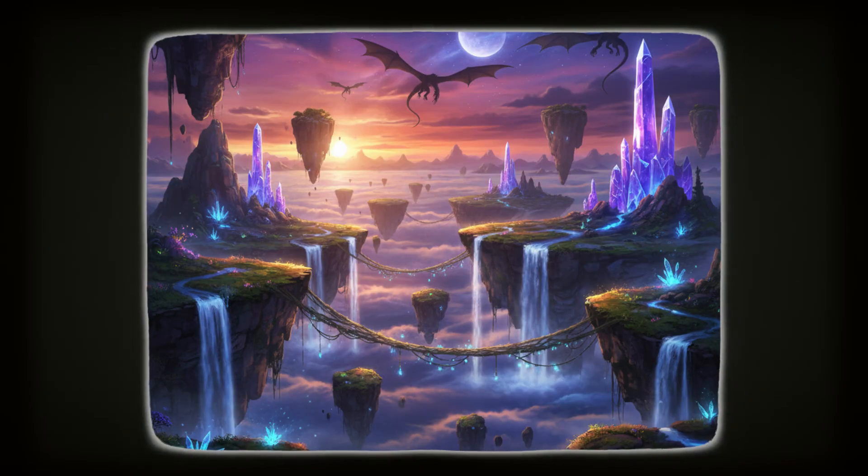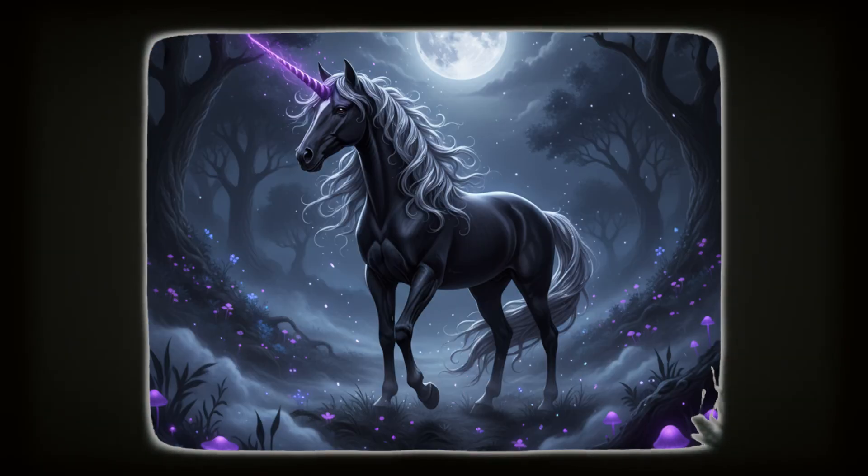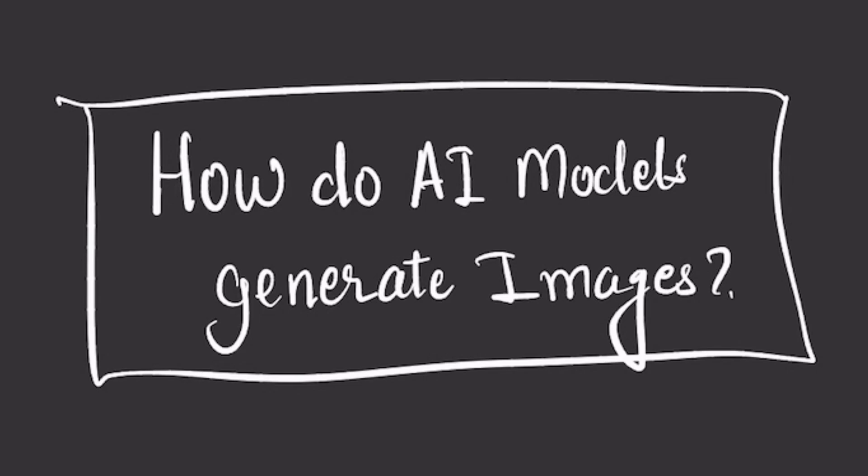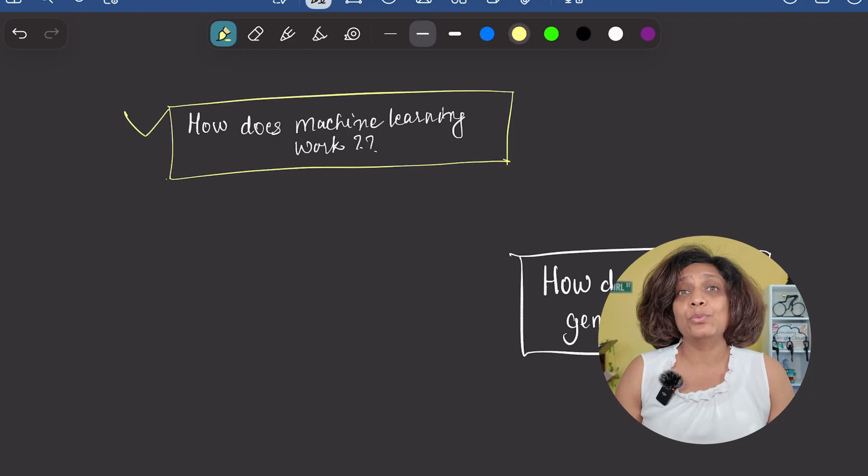The magic behind many of these incredible AI art and video generators is this powerful form of generative AI called diffusion models. But before we dive into how we generate images, we first need to understand the basics. How does machine learning work?